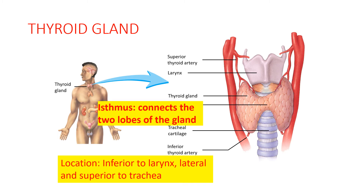The thyroid gland is located under the voice box or larynx, right on top of the trachea or windpipe. It is a butterfly-shaped gland that has a right and a left side connected by an isthmus.